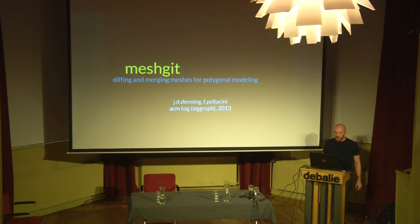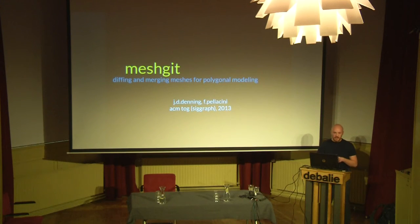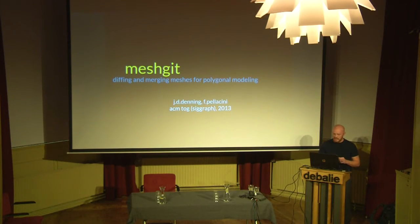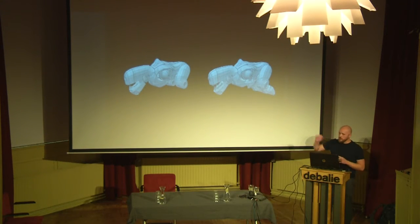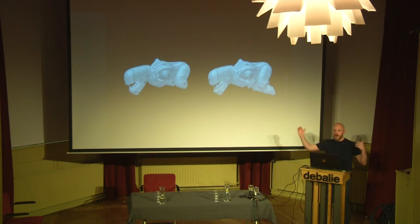I want to move on to make sure I don't run past my time. The second paper I'd like to talk about is MeshGit — Diffing and Merging Meshes for Polygonal Modeling. This was published at SIGGRAPH 2013. If I showed you these two meshes — just two snapshots — you have no idea what happened between them. Can you tell me what happened in between those two edits?